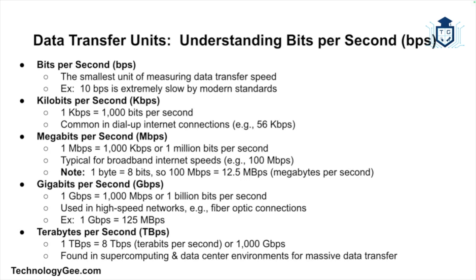Now let's discuss data transfer units, which are essential for measuring the speed at which data is moved or transmitted. The first is bits per second — bits are the smallest unit of data and when we talk about transfer speeds we often use bits per second. For example, an internet connection transferring data at 10 bits per second would be extremely slow by today's standards. A kilobit per second is 1000 bits per second. Historically, dial-up internet connections were measured in kilobits per second, like 56 kilobits per second.